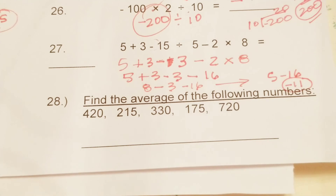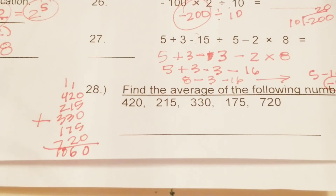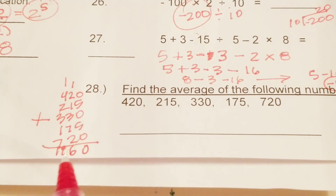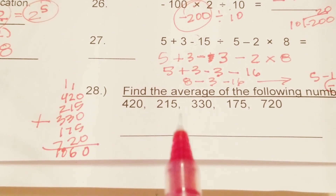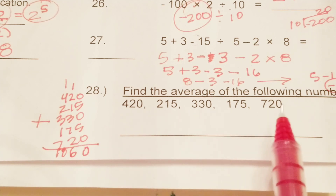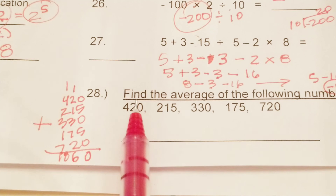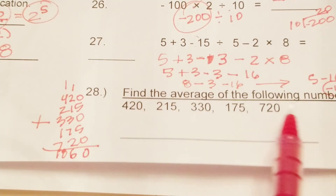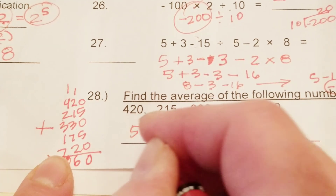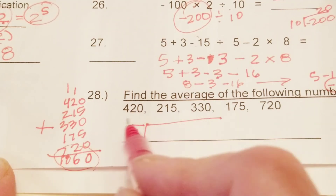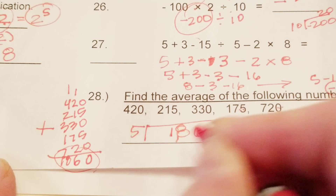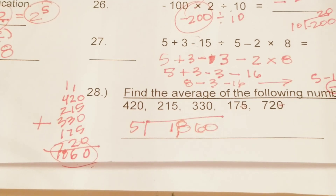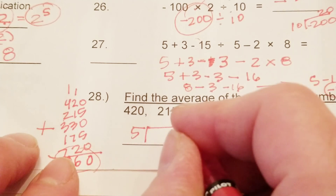Number 28: find the average of the following numbers. You're going to add these up very carefully. After adding all of these numbers together I got 1860. You count how many numbers you have — 1, 2, 3, 4, 5 — so you divide your sum by 5, and once you do the division it comes out to 372. So 372 is the average of all these numbers.